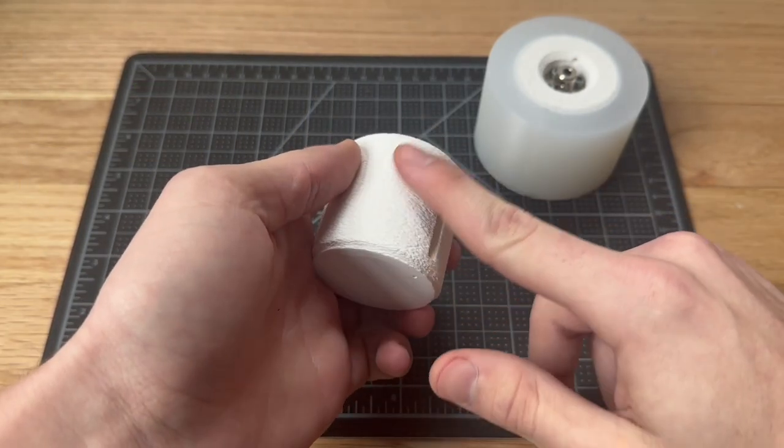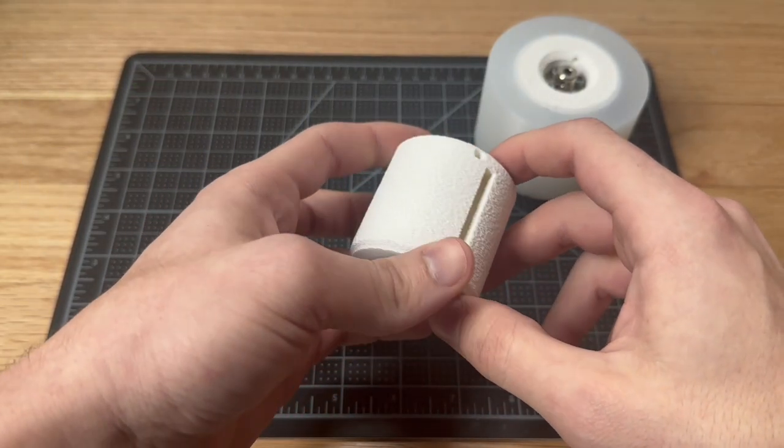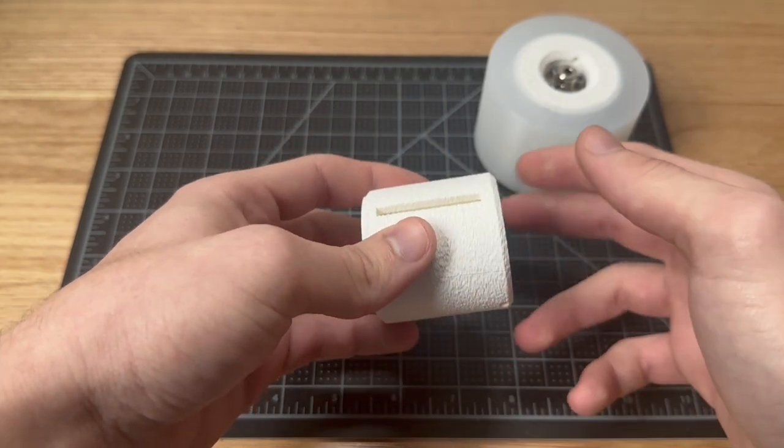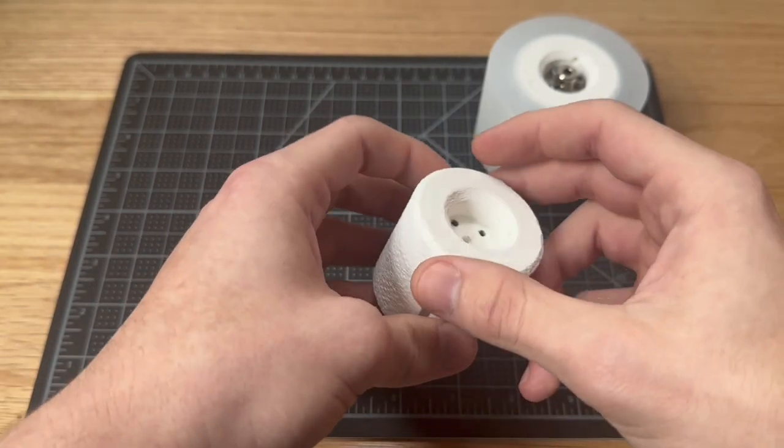Additionally, we incorporated this rough texturing to increase surface area and tried to help the silicone grip onto the hard plastic core.